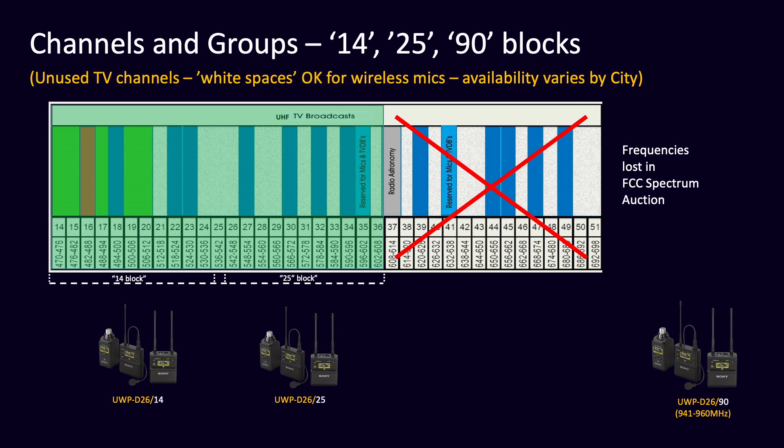In UWPD we split this large spectrum range into two and offer our equipment packages in either a 14 system, which covers UHF TV channels 14 through 25, or a 25 package, which covers UHF TV channels 25 through 36.